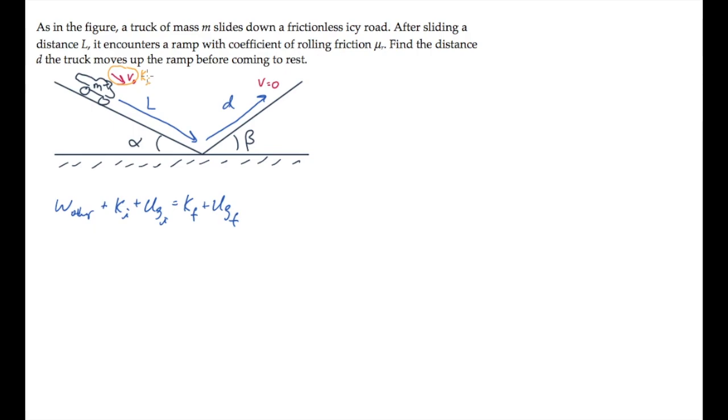It starts a length L up the first ramp, which means it has an initial height L sin α, giving it some initial gravitational potential energy relative to the ground.